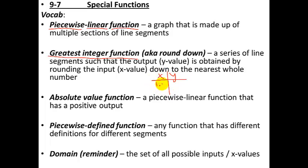If x is 1.1, the output is 1. If x is 2.6, the output is 2. So the output is always an integer. Your graph is going to be a bunch of flat, horizontal lines — because if I put an input of 1.1, 1.2, 1.3, or 1.4, the output stays as 1.